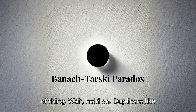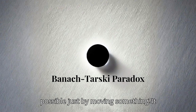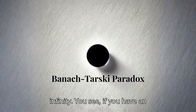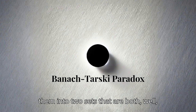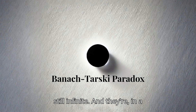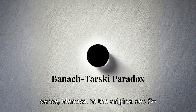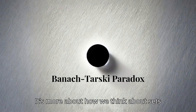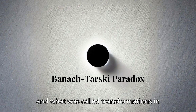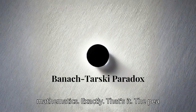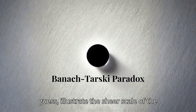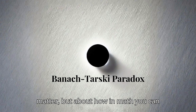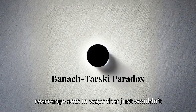Wait — duplicate? Like making an exact copy? How is that even possible just by moving something? It definitely goes against our intuition. The whole thing hinges on the concept of infinity. If you have an infinite number of points, you can divide them into two sets that are both still infinite and, in a sense, identical to the original set. It's more about how we think about sets and transformations in mathematics. The pea and sun analogy just illustrates the sheer scale of the paradox — we're not really talking about matter, but about how in math you can rearrange sets in ways that just wouldn't work in the real world.